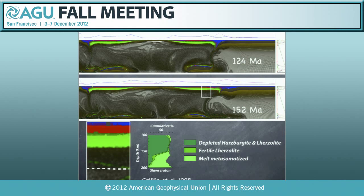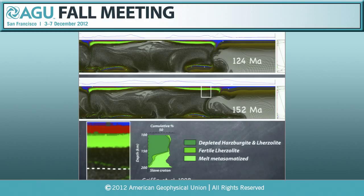Looking at the composition of the subcontinental lithospheric mantle in Archean cratons, we quite often observe that the upper part of the plateau is made of depleted harzburgite but is underplated by more fertile material. This cross-section also shows this, as the convective mantle gets accreted into the lid.